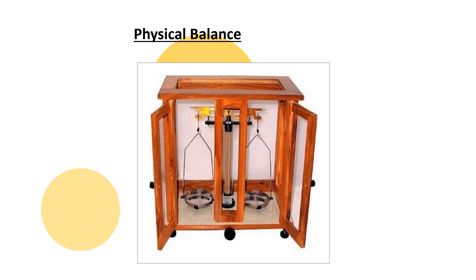This is your physical balance — you can see two pans. This is your left pan and this is your right pan. We keep the standard mass in the left pan and the unknown mass on the right side. This is the fulcrum, and this is your needle pointer, which gives you the measurement. Here is the scale used for measurements.